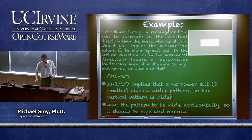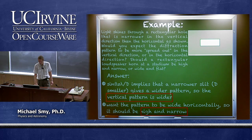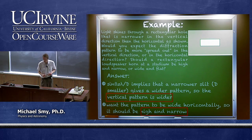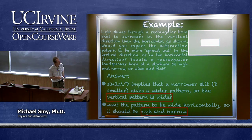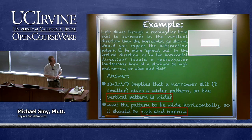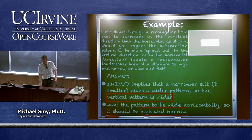Let's look at another example: light shining through a rectangular hole that is narrower in the vertical direction than in the horizontal direction. The question is whether the diffraction pattern is more spread out in the vertical or horizontal direction. From sine theta equals lambda over d, a narrower slit gives a wider pattern, so the vertical pattern is wider since the vertical slit diameter is smaller.